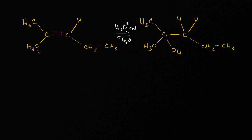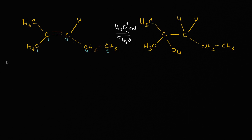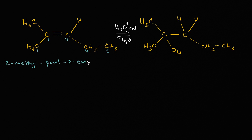So what we're starting with, we could call this one, two, three, four, five. So we have a methyl group on the number two carbon, it is a pentene, and there's a double bond between the number two and number three carbons. So this is 2-methylpent-2-ene.